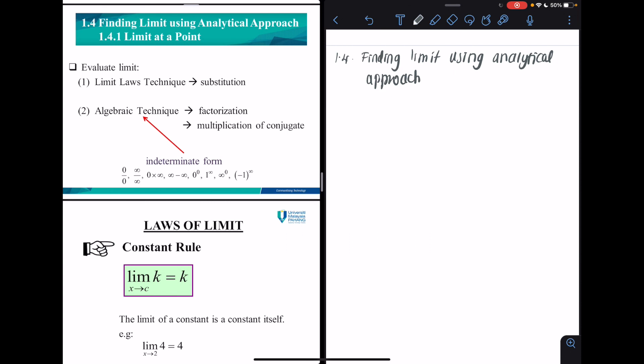The first one is limit law techniques that require you to use direct substitution. If you use direct substitution and you end up having an indeterminate form such as zero over zero, infinity over infinity, zero times infinity, until negative one to the power of infinity, then algebraic techniques will be used.